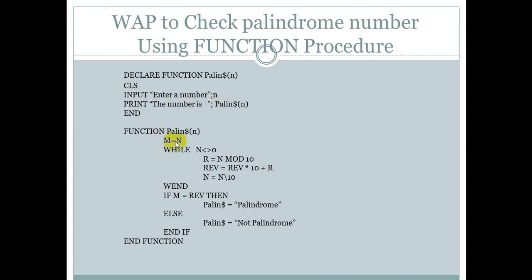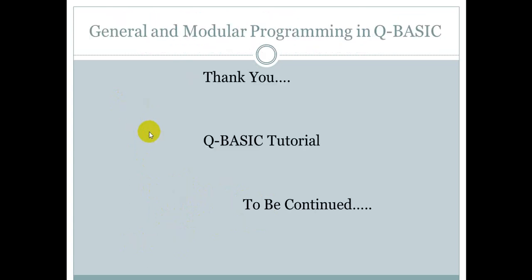The print statement is used to call this function procedure, passing the argument. The original number is stored in variable M, and the while-when loop reverses the number, storing the result in REV. If the original number equals the reverse number, it is a palindrome; else it is not a palindrome. Remember that the print statement is used to call this function procedure.